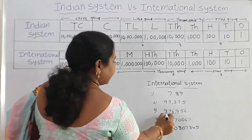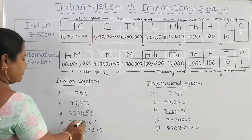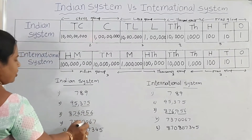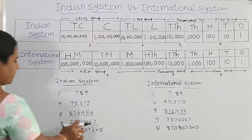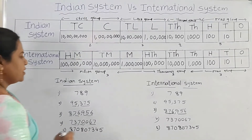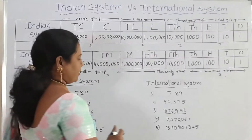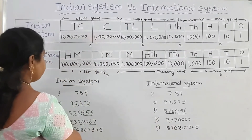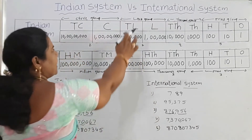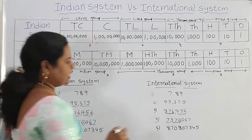So 8,76,956 in the Indian system. Now the next number: 7,370,067. In the Indian system, we divide with 3 then 2 places pattern. In the international system, 3 places after the 1st comma, next 3 places after the 2nd comma. The 7 is in the 10 lakhs place, and the same place in the international system is the 1 million place. So 10 lakhs equals 1 million — there are 7 millions, giving 7,370,067.